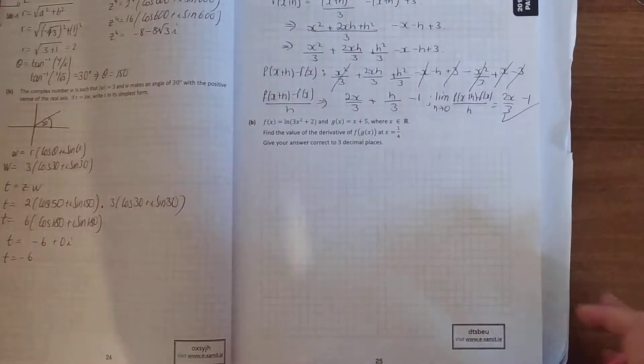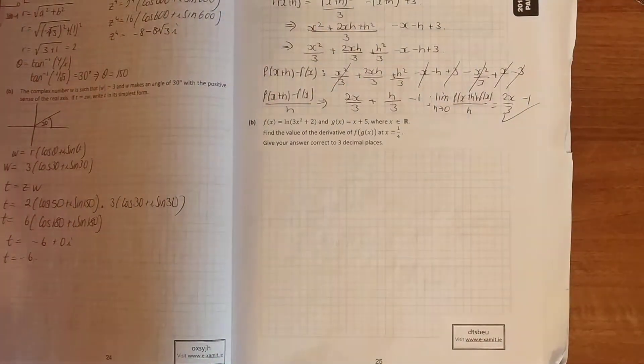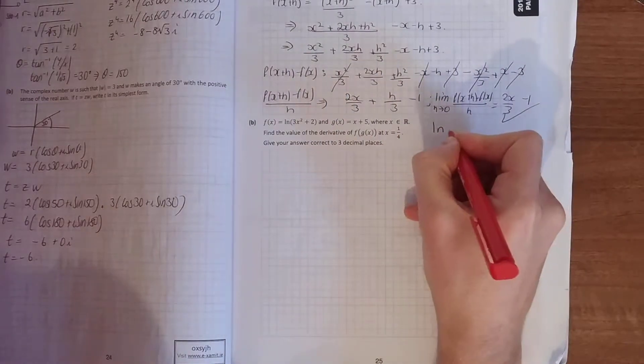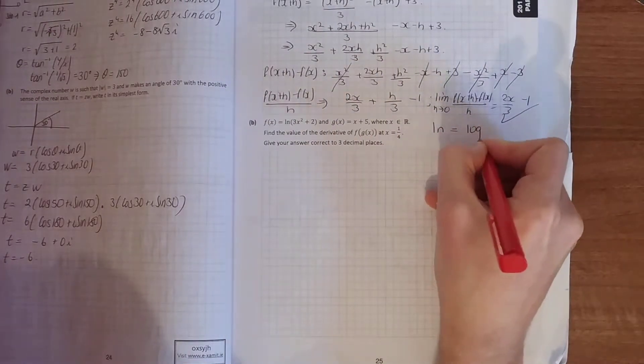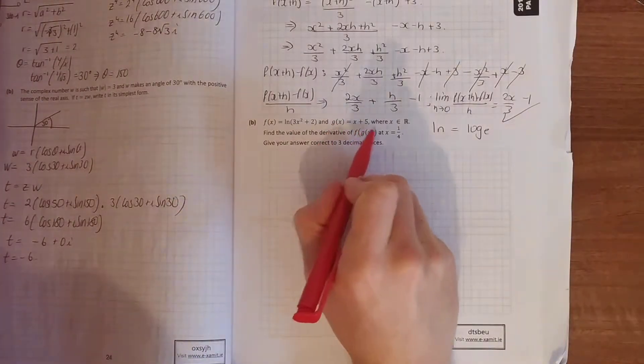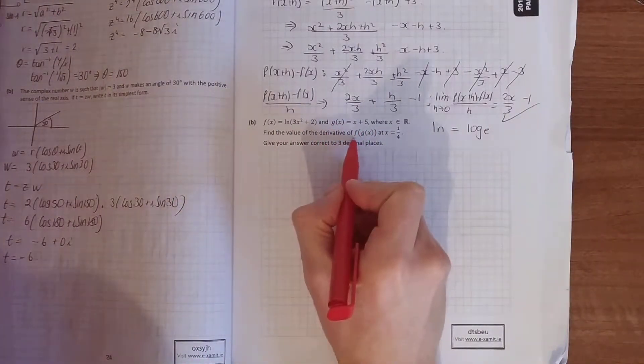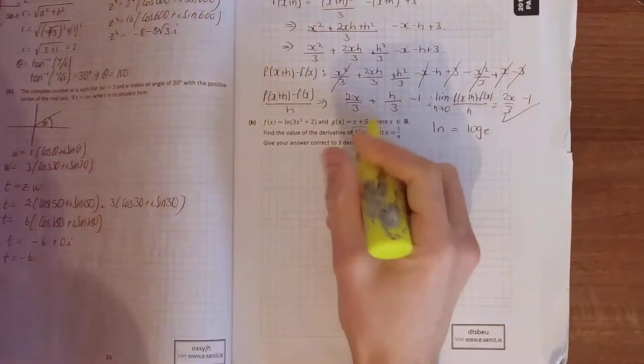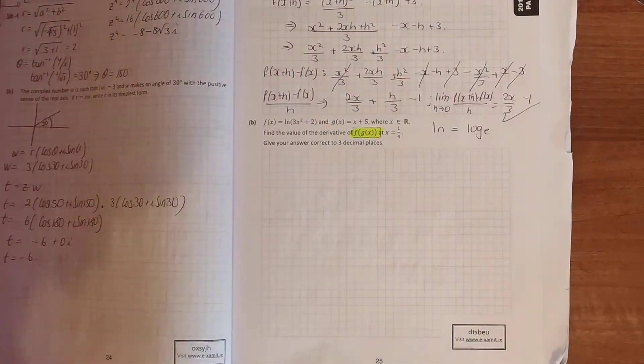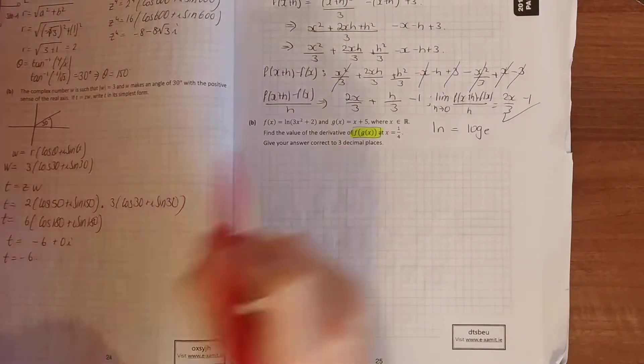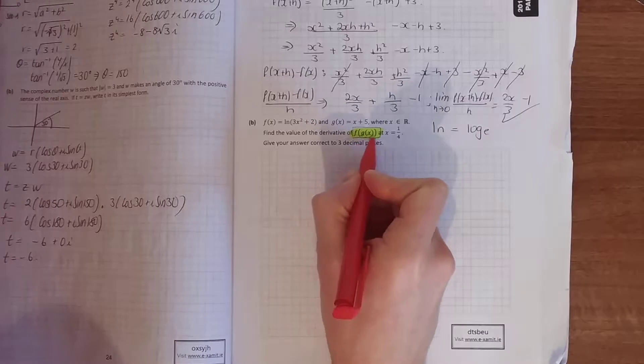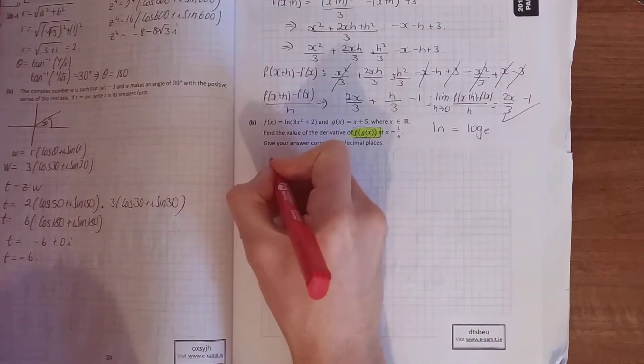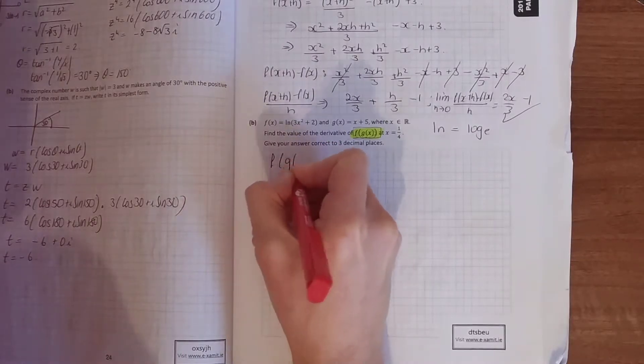Now, the second part of that question. We're looking at logs. So, ln. Now, ln just means log to the base e. So when you see ln, that's the same as log to the base e. And g of x. So, find the value of the derivative f(g(x)). Now, before we find the value of the derivative of f(g(x)), we must find f(g(x)). This is a composite function. So, all you've got to do is kind of work back.